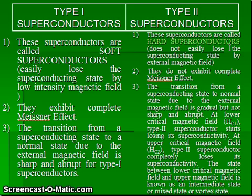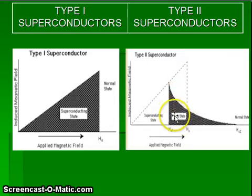the superconductor starts losing its superconductivity. At the upper critical field, the type 2 superconductor completely loses its superconductivity. The state between the lower critical field and upper critical field is known as the intermediate state, vortex state, or mixed state.